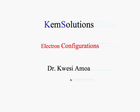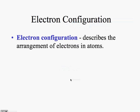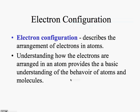Today we're going to look at determining the electronic configuration of an atom. First, we need to understand that electronic configuration describes the arrangement of electrons in an atom. This arrangement of electrons accounts for a large amount of the behavior of that particular atom or molecule.